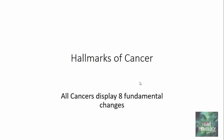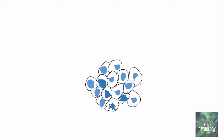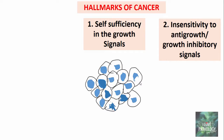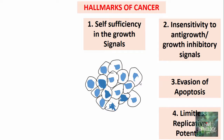All cancers display eight fundamental changes in cell physiology referred to as hallmarks of cancer. The first hallmark is self-sufficiency in growth signals — tumors have the capacity to proliferate without any external signals. The second is insensitivity to anti-growth or growth inhibitory signals — these tumors do not respond to molecules that inhibit normal cell growth. The third is evasion of apoptosis — tumors are resistant to programmed cell death. The fourth is limitless replicative potential, also referred to as immortality, with unrestricted proliferative capacity like a stem cell.